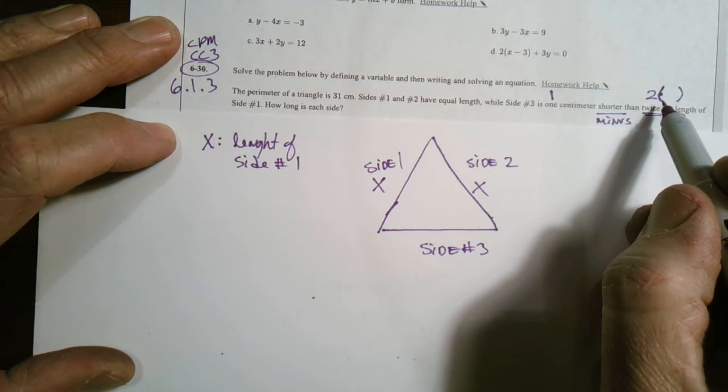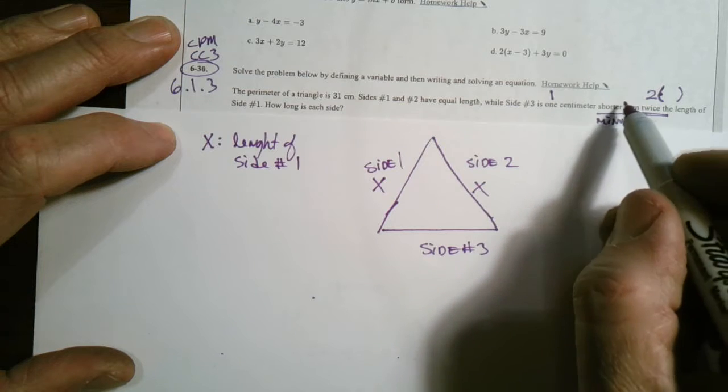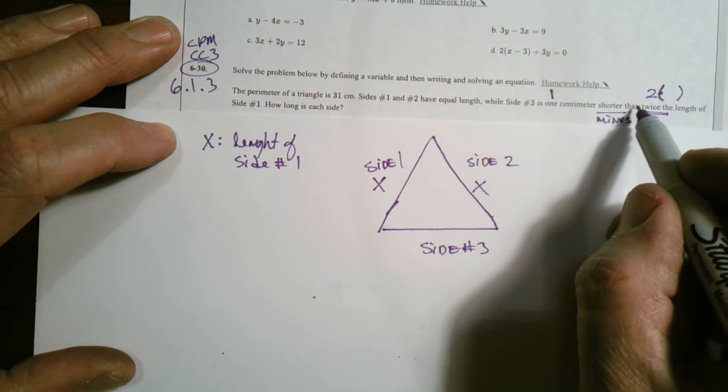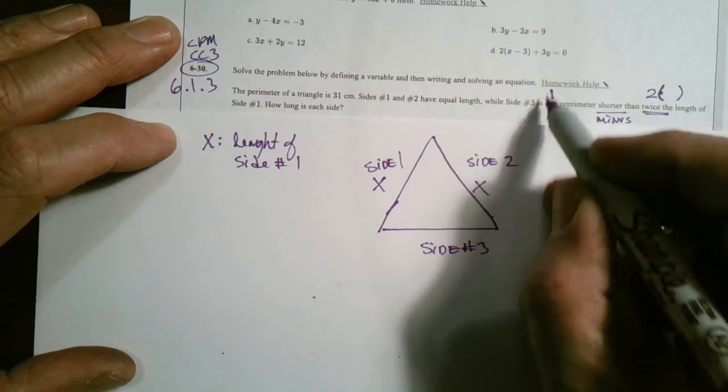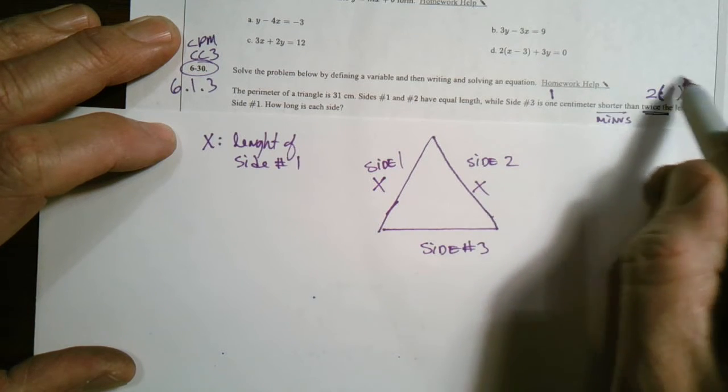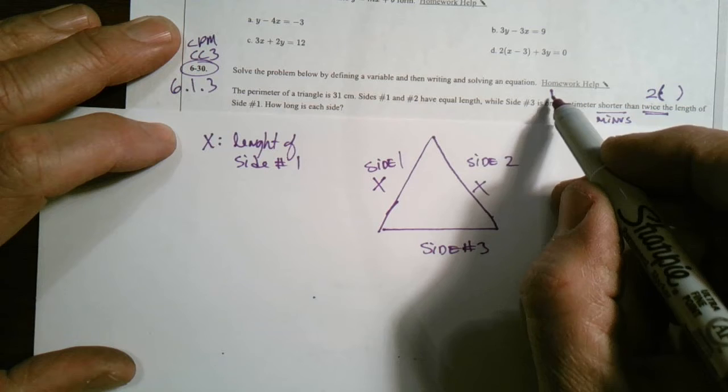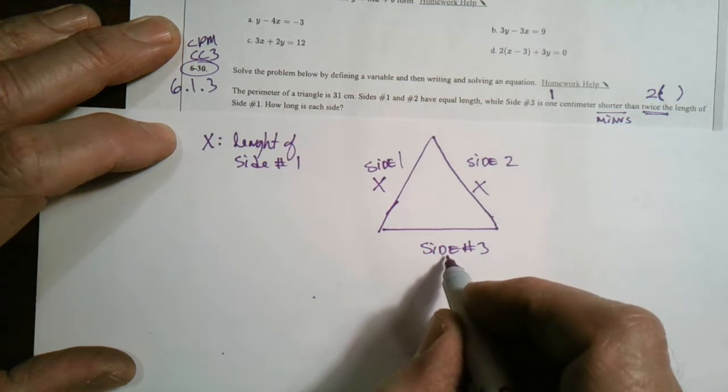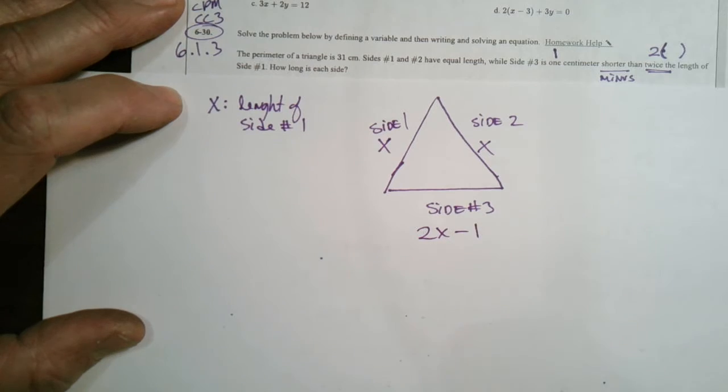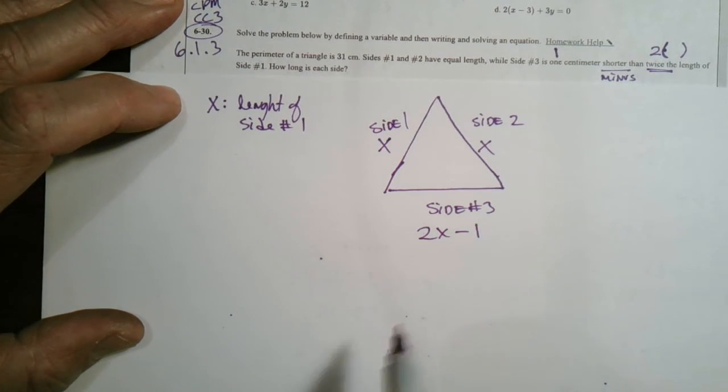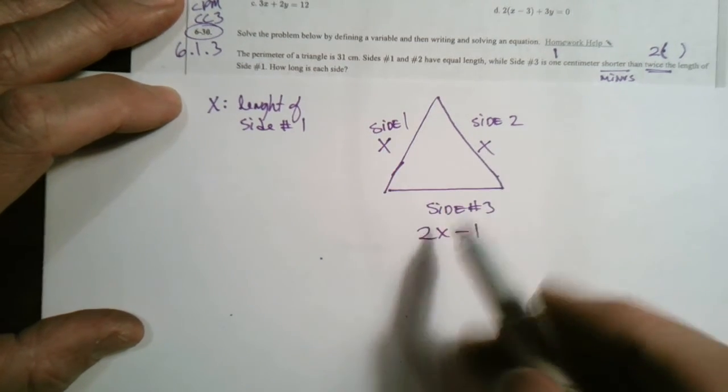I'm not going to go 1 minus 2x because then that would give me a negative. It's 1 centimeter shorter than, that word than is kind of that reverse word to say you take what's going on here, then you subtract. So side 3 will be defined as 2x minus 1.